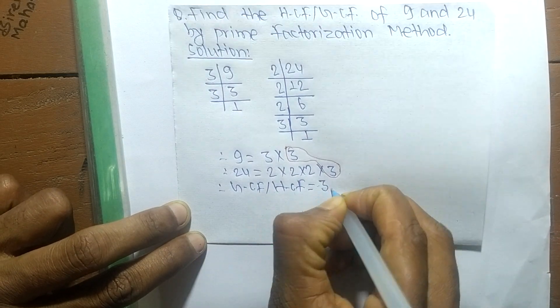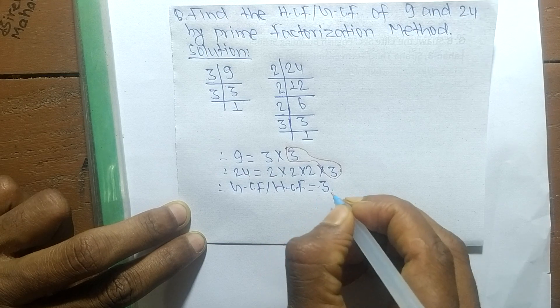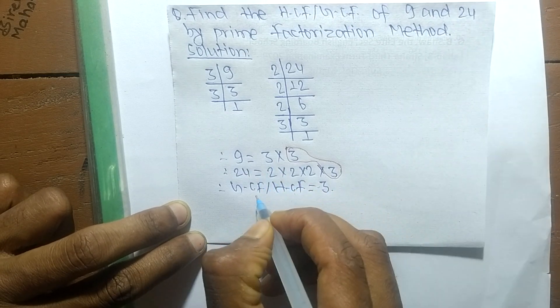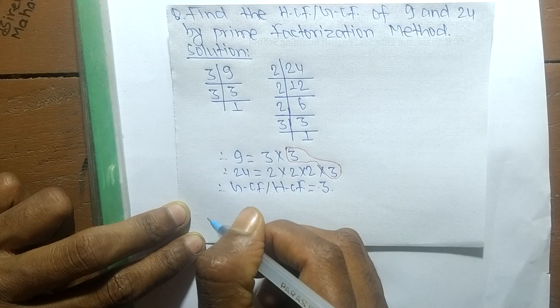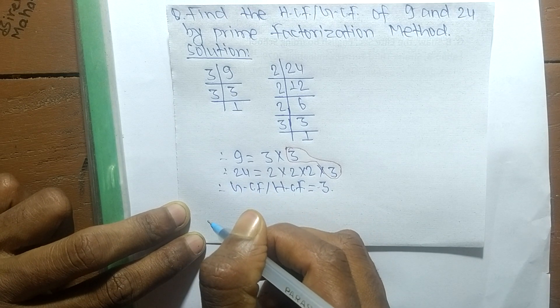So 3 is the GCF or HCF of 9 and 24. So this much for today and thanks for watching.